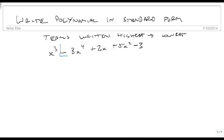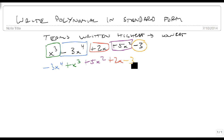We start by identifying our highest term, which is our degree 4, or minus 3x to the fourth, followed by our x cubed, then our 5x squared, then our 2x, and finally, our minus 3. So now our polynomial is written from highest degree to lowest degree.